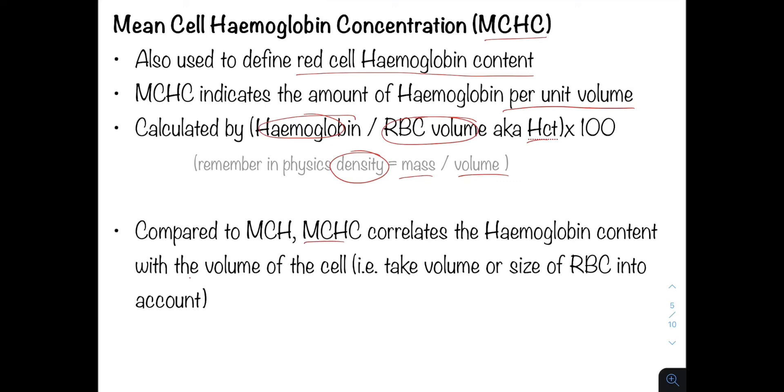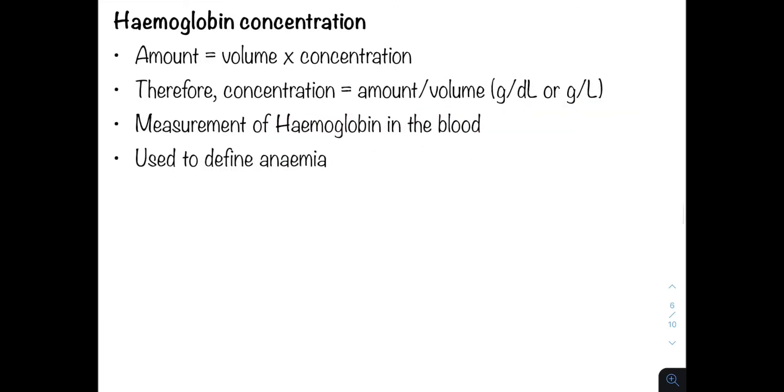Now the MCHC correlates the hemoglobin content with the volume of the red cell. So it takes the volume or the size of the red blood cells into account. The hemoglobin concentration on the other hand is the measurement of hemoglobin within the blood, and this is very important because it is used to define anemia.